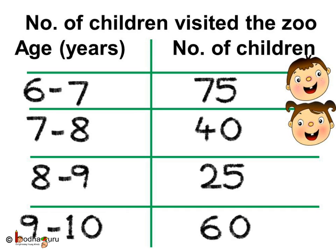In the age group 7 to 8 years there were 40 children. 25 children in the age group of 8 to 9, and 60 children were in the age group 9 to 10.